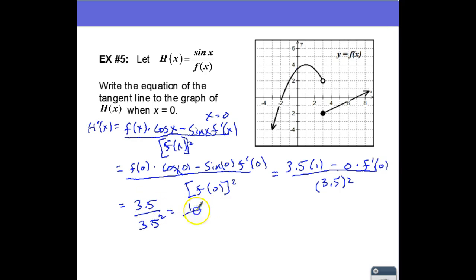And so we end up with 3.5 minus 0 over 3.5 squared. And so one of the 3.5s cancel. I'm going to get 1 over 3.5, 2 over 7, multiplying top and bottom by 2.